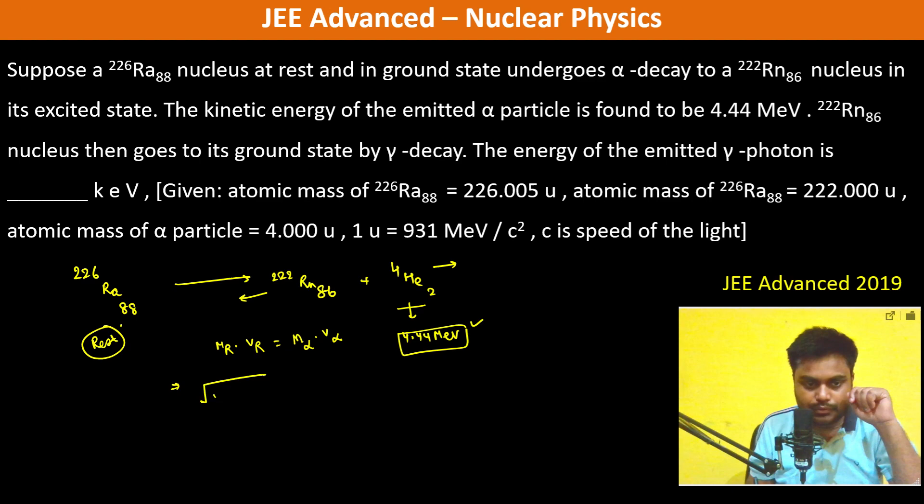Now therefore, we can, momentum is conserved, so therefore root over 2 m_R into K_R should be equal to root over 2 m_alpha into K_alpha. That means the kinetic energy of R is equal to mass of alpha is 4 into 4.44 mega electron volt divided by 222.